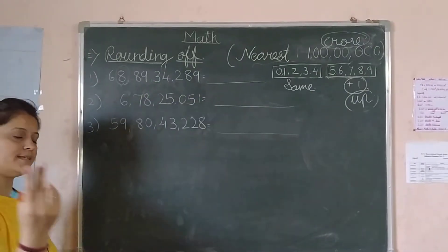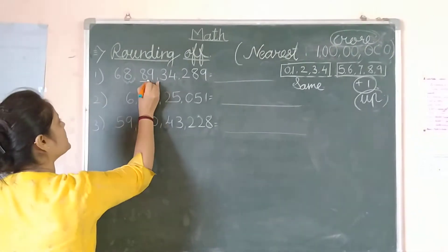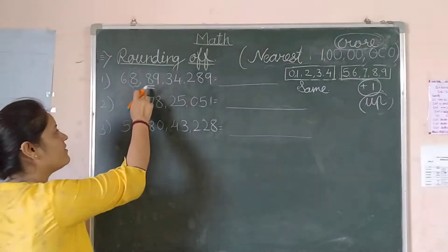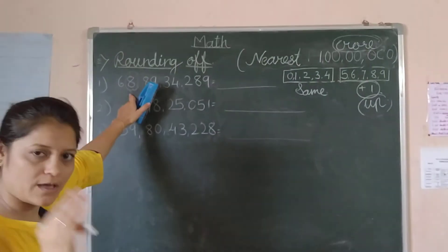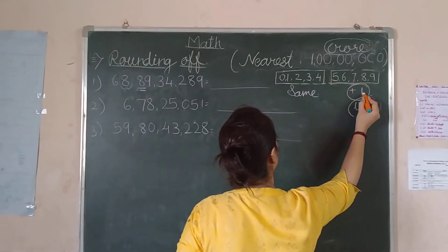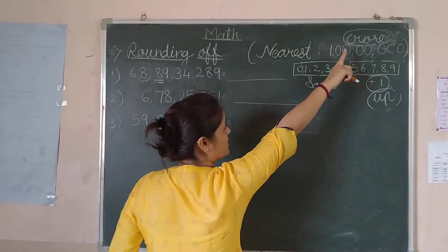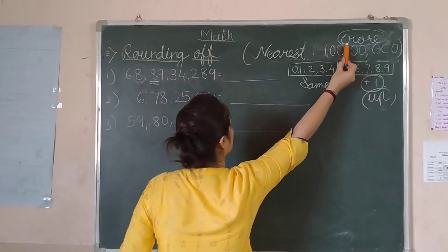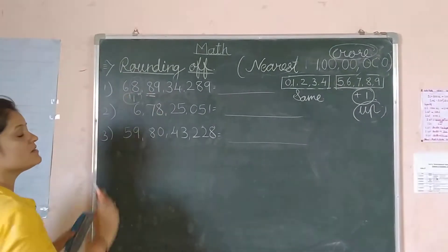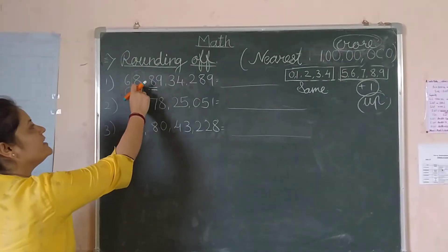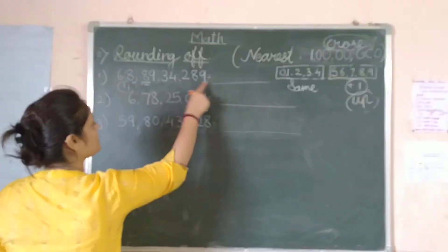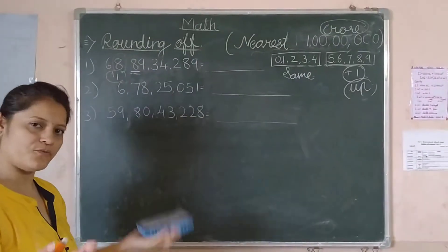Now we will see our second step. We will check our next digit. Our next digit is 8. What is the rule — if the next digit is 5 or greater than 5, what do we do? We do plus 1. Where do we do it? In the crore place. So 8 plus 1 is 9. We write 9 crore here, and after that we write 0 instead of all the remaining digits, because we have rounded off.